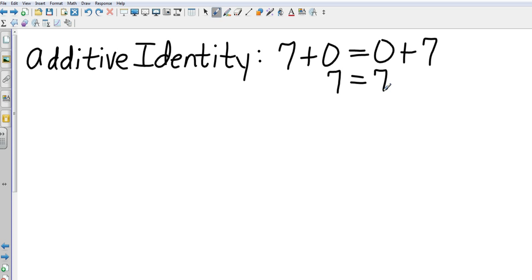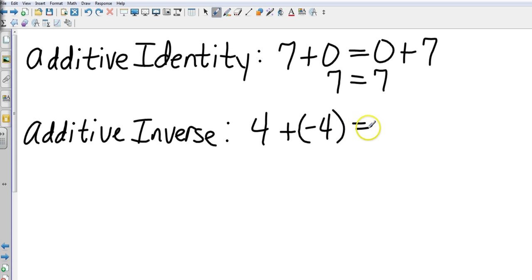We also have additive inverse. Additive inverse, and what it means is, what can I add to my number to get zero? So if I had the number four, I would add a negative four to make it zero. Now remember, whenever we have the plus and the minus, this is really just the same as four minus four, which also gives me zero. So that takes care of my additive identities.